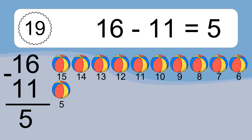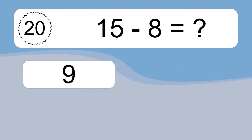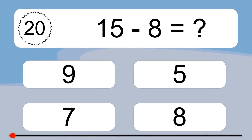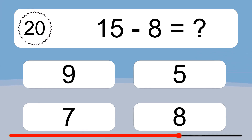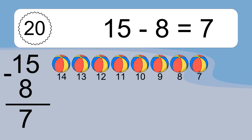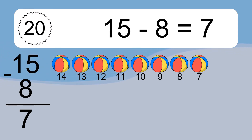15 minus 8 equals 7. Let's count it: 14, 13, 12, 11, 10, 9, 8, 7.